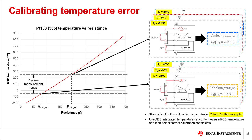Moreover, recall that this calibration profile is specific to the RTD curve. If the system needs to measure PT1000 and copper 50 RTDs in addition to the PT100 shown here, it would be necessary to repeat this entire process for each RTD type.